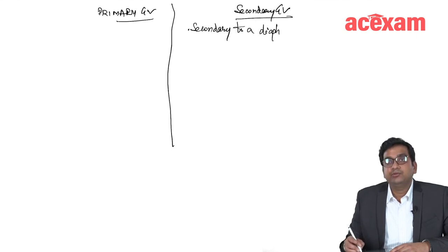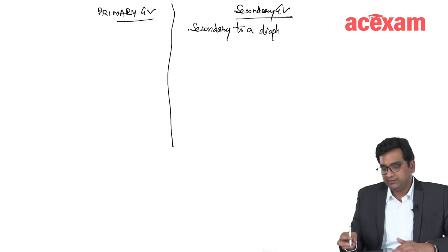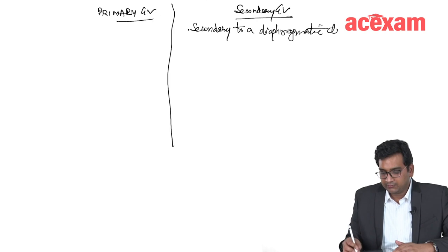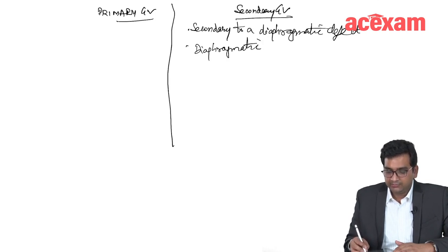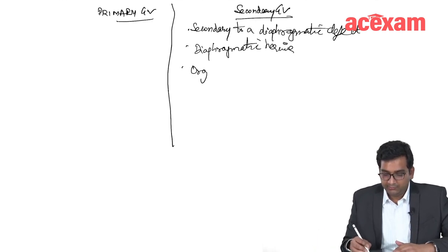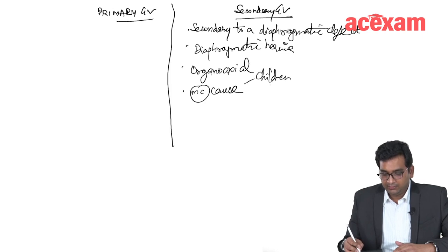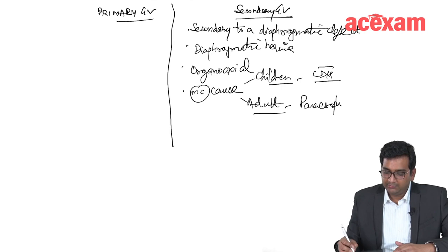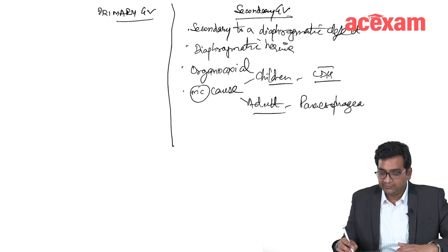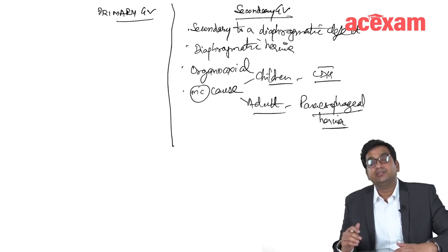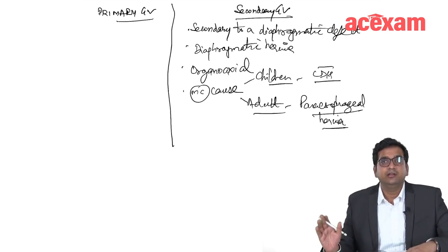As shown in the esophagus topic diagram, there was an upside-down type of stomach associated with a diaphragmatic defect. Secondary volvulus is associated with type 2 or type 3 diaphragmatic hernias. In children, the most common cause is congenital diaphragmatic hernia — the Bochdalek type. In adults, it is paraesophageal hernia — type 2 or type 3, with type 3 being more common than type 2.